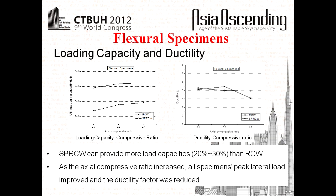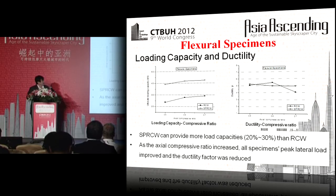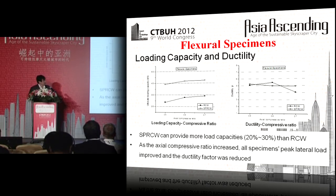Steel plate reinforced concrete can provide much higher strength, better deformation ability, and dissipate more energy. Looking at axial compressive ratio versus capacity, steel plate reinforced concrete can provide an extra 20% to 30% strength over reinforced concrete in bending. For ductility, with increasing axial compressive ratio the ductility decreases, but the ductility of steel plate reinforced concrete is still better than normal reinforced concrete.